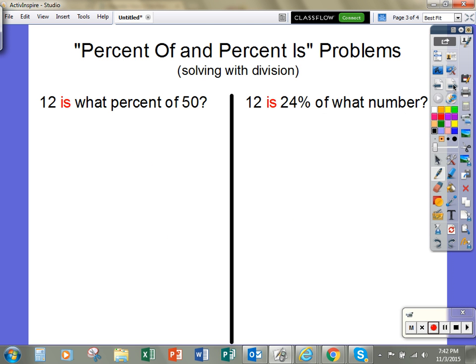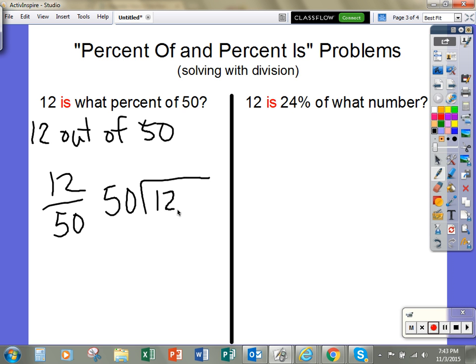The second way to solve percent of and percent is problems is to use division. If I rewrite this problem like I did before, 12 out of 50, I know that I can write that 12 over 50. And I know that to turn a fraction into a percent, I can divide and get a decimal answer and then turn that into a percent.